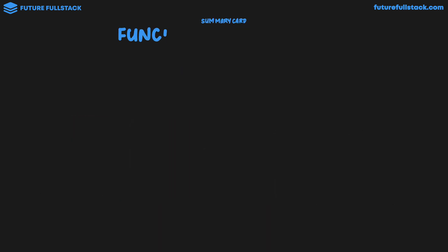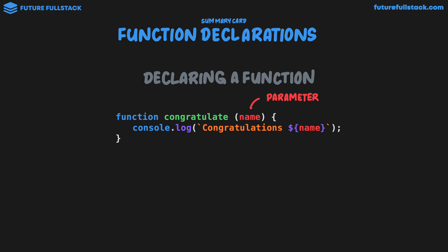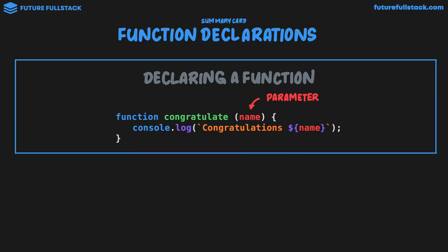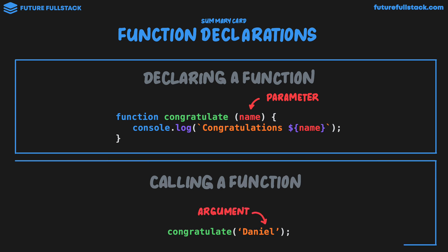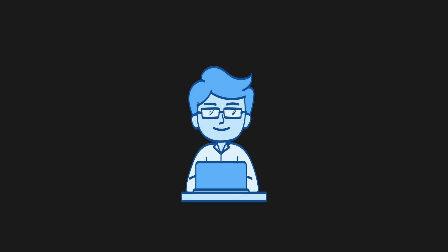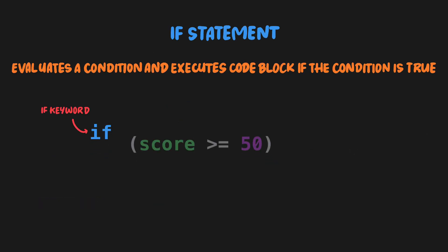Let's wrap up with a summary card on function declarations. We first looked at declaring a function and discussed how we can give our function a parameter, which is like a variable that can be used inside the function body. We then discussed calling a function — using the function name followed by parentheses — and if the function has a parameter, we need to provide an argument, which is the actual value we want to use. If you've enjoyed this style of teaching and are looking at mastering JavaScript, you can join me in my JavaScript full course, available for free on my channel, designed for complete beginners. Subscribe to stay in the loop with new releases — see you in the JavaScript full course.